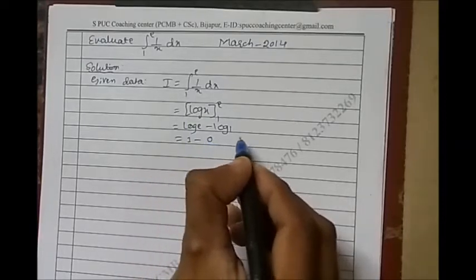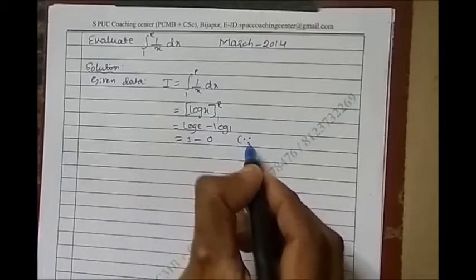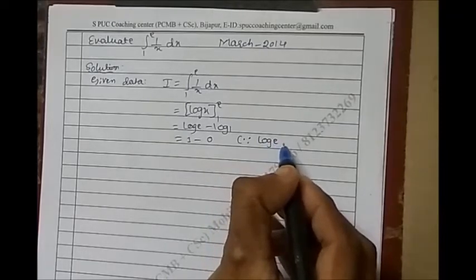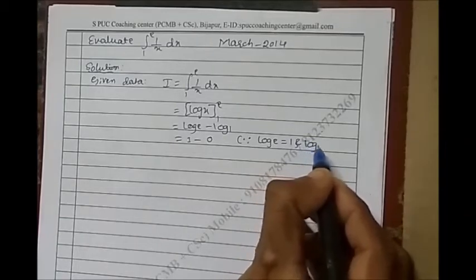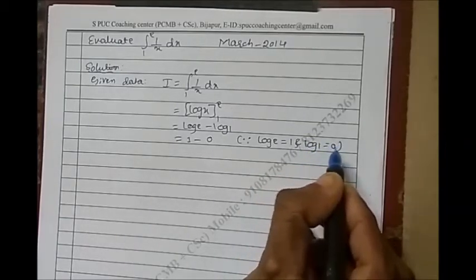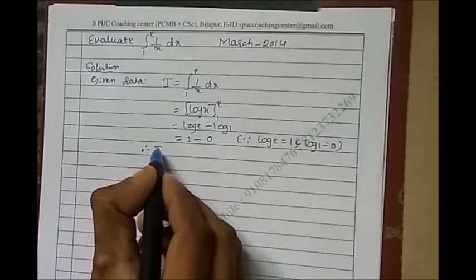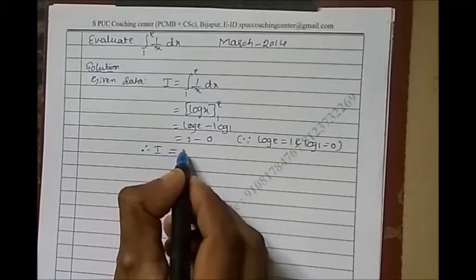Here, log e to the base e equals 1, and log 1 equals 0. Therefore, I equals 1.